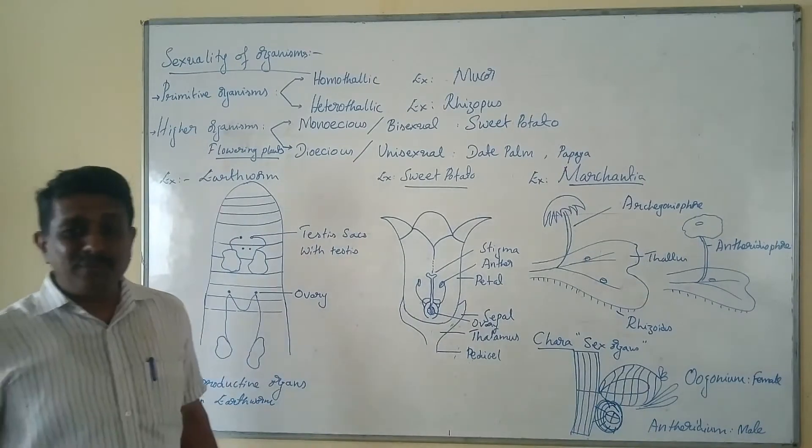This covers the main important features of sexuality of organisms. In competitive exams, certain classical examples are asked with reference to dioecious, unisexual, monoecious, bisexual, or hermaphrodite conditions. Thank you.